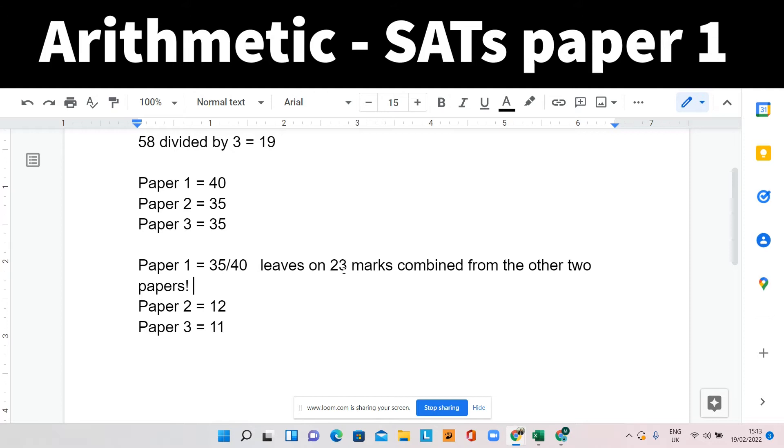Only 23 marks they will need to score across the other two papers. Now, given that the other two papers are out of 35, it gives them a really good chance. They would only need 12 from paper two and 11 from paper three or vice versa to pass their test if they do really well on that paper one.